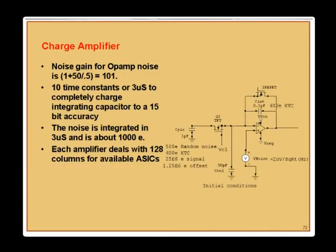You need about 10 time constants, or 3 microseconds, to completely charge an integrating capacitor to 15-bit accuracy. Noise integrated over 3 microseconds is about 1000 electrons. Each amplifier deals with 128 columns for an available ASIC. A pristine amplifier has 2 nano-volts per square-root hertz, but in practice it's 14 to 20 nano-volts per root hertz due to current limitations, making column noise even more severe.